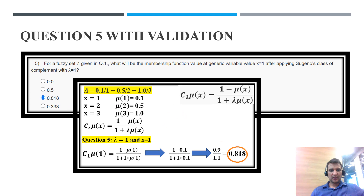Question 5: same formula, lambda equals 1 and x equals 1. We put the values into the formula and the answer equals 0.818.